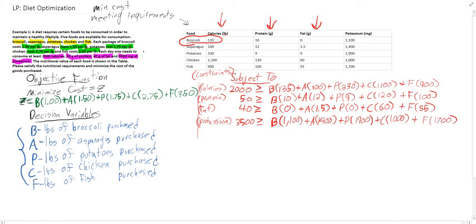We've now completed all of the constraints — subject to — for calories, protein, fat, and potassium. We also need the non-negativity constraint, which is very important: every single decision variable must be defined as greater than or equal to 0. Otherwise your mathematical model will not be feasible and you will not find a solution, or it will not be bounded.